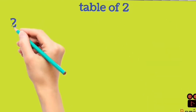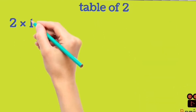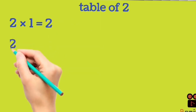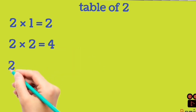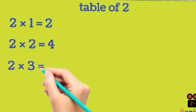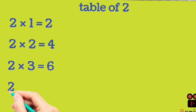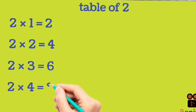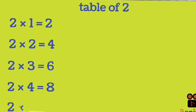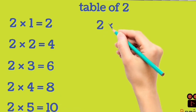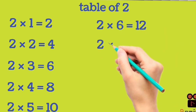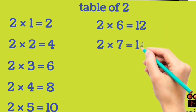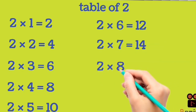Table of 2. 2 1's are 2. 2 2's are 4. 2 3's are 6. 2 4's are 8. 2 5's are 10. 2 6's are 12. 2 7's are 14. 2 8's are 16.